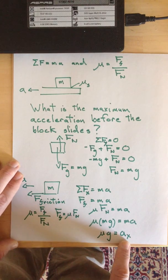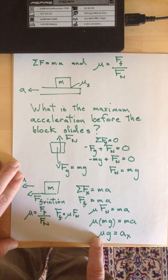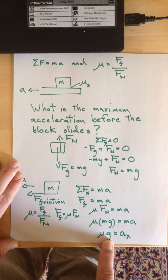Kind of interesting. The maximum acceleration is simply the coefficient of friction multiplied by 10 meters per second squared, roughly.